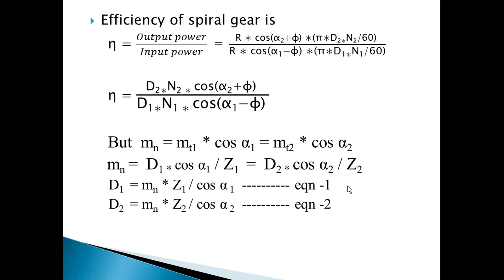Efficiency is output power upon input power. So η equals [R·cos(α2 + φ)·πd2n2/60] divided by [R·cos(α1 − φ)·πd1n1/60]. R, π, and 60 cancel out, giving η = [d2n2·cos(α2 + φ)] / [d1n1·cos(α1 − φ)]. There is no single force present in this equation — only pitch circle diameters, RPM values, spiral angles, and the friction angle.